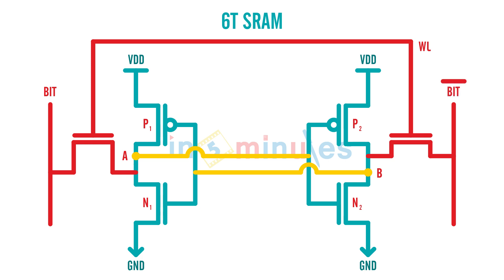Mind you, these are just names — bit and bit bar can both have the same polarity or opposite polarity. Don't be confused that bit and bit bar always have to be complemented to each other. Let's complete the naming by calling these two NMOS transistors N3 and N4. If you see clearly, I now have six transistors in my diagram: P1, P2, N1, N2, N3, and N4. This is a six-transistor circuit — a Static Random Access Memory. The word 'static' means there is some sort of feedback. Because the inverters are cross-coupled, the output of one goes to the input of the other and vice versa.